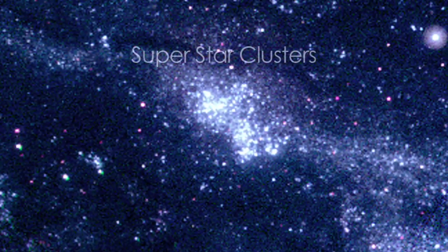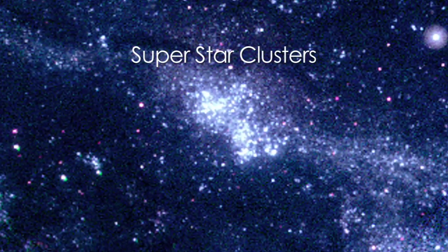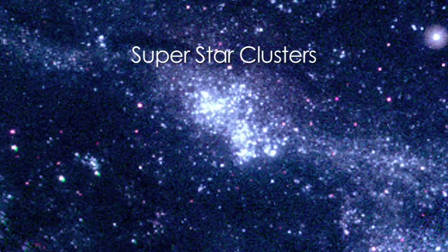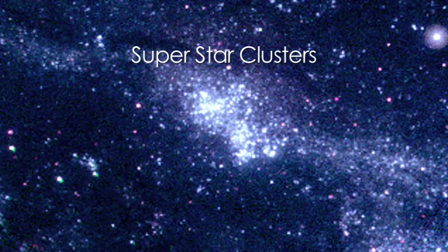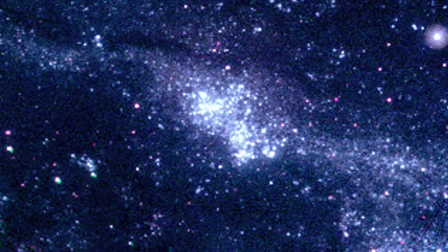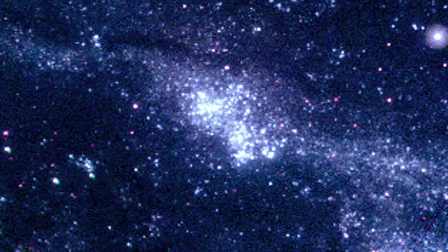In contrast, M31's spiral arms sparkle with dense clusters of hot, young blue stars. As in our own galaxy, the disk and spiral arms contain most of the gas and dust needed to produce new generations of stars.